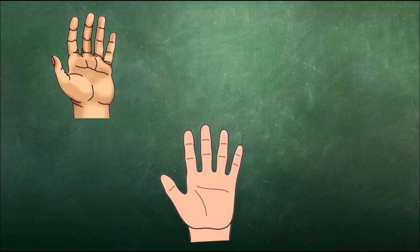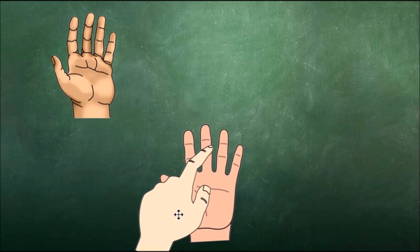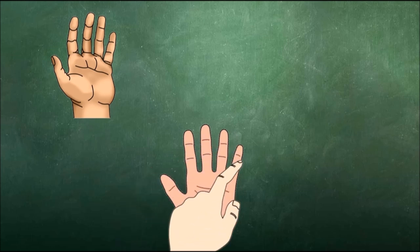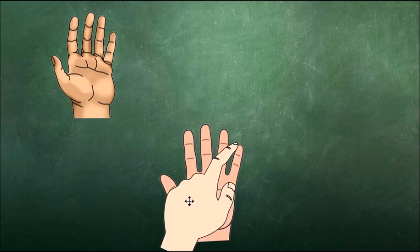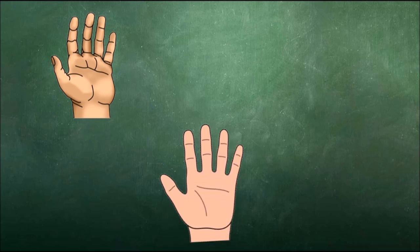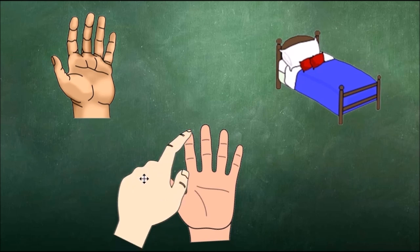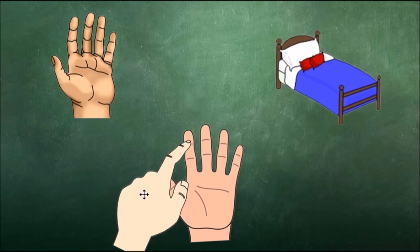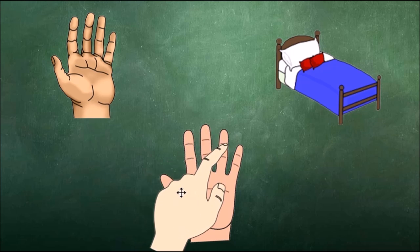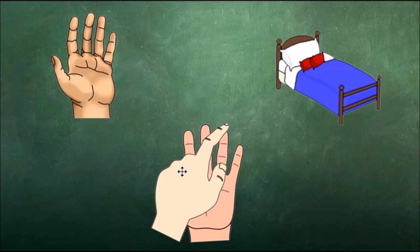Let's do another example. What is this a picture of? Students respond with hand. We would show the sounds on our fingers: H-A-N-D. What is the last sound we hear in hand? Students respond with D. What is this a picture of? Students respond with bed. We would show the sounds on our fingers: B-E-D. What is the last sound we hear in bed? Students respond with D.